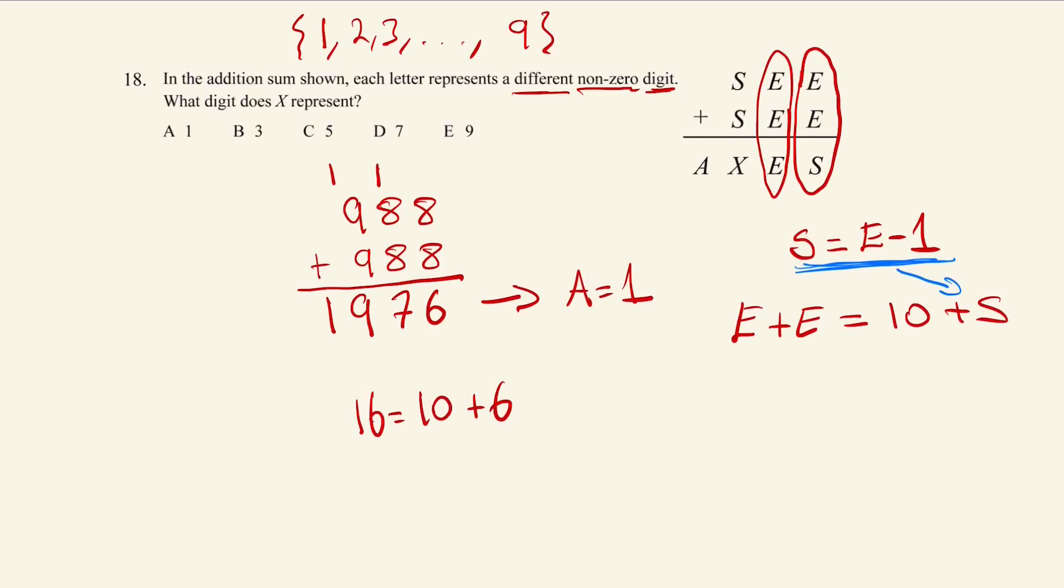And E plus E is just 2E. So what we're saying is 2E equals 10 plus E minus one. 10 take away one is nine, so this is saying E plus nine is 2E. If I minus E from both sides, I now get that E equals nine.